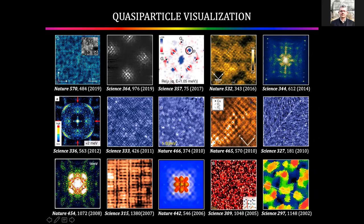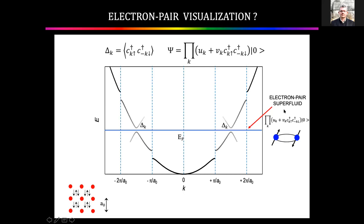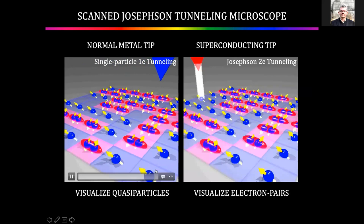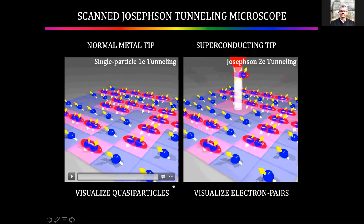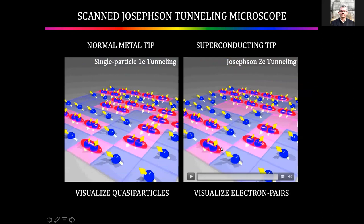By using these techniques, one can visualize the electronic structure of the excited states of a superconductor. But people began to realize — what about visualizing the electron pair fluid? Does it contain new physics? Does it contain new secrets of quantum matter for which we need direct visualization? To visualize the electron pair fluid, instead of using a metal tip with single electron eigenstates, you want to use a superconducting tip whose only eigenstates are pairs — then the current would be related to the density of pairs. That's the concept of scanned Josephson tunneling microscopy.